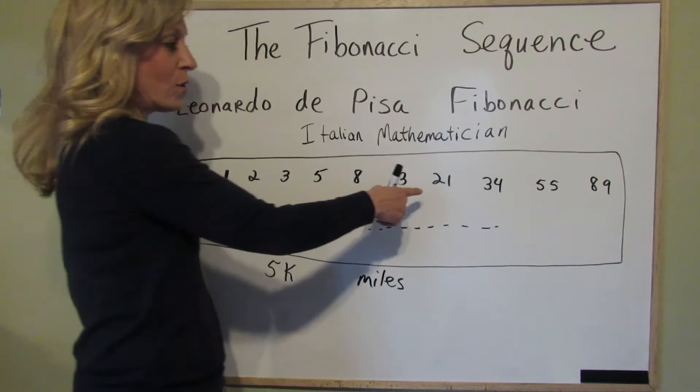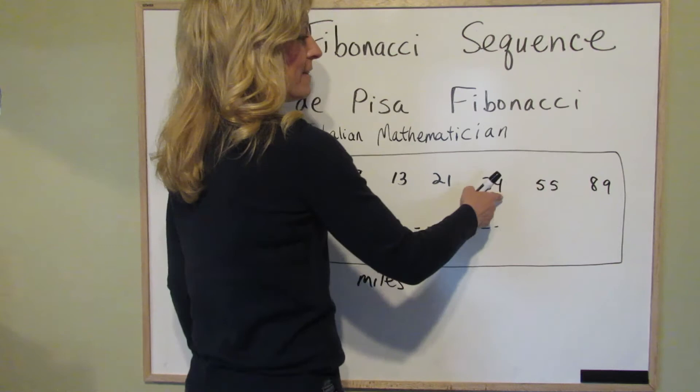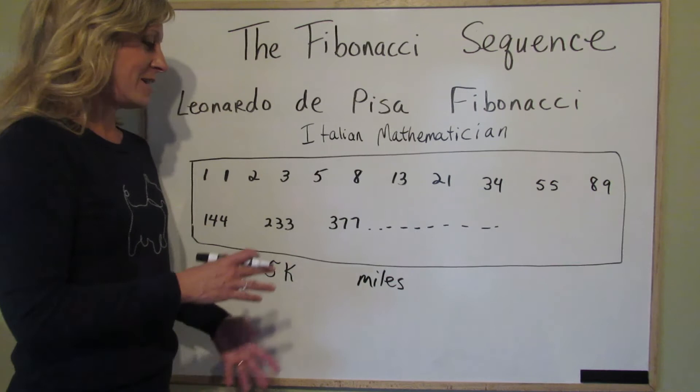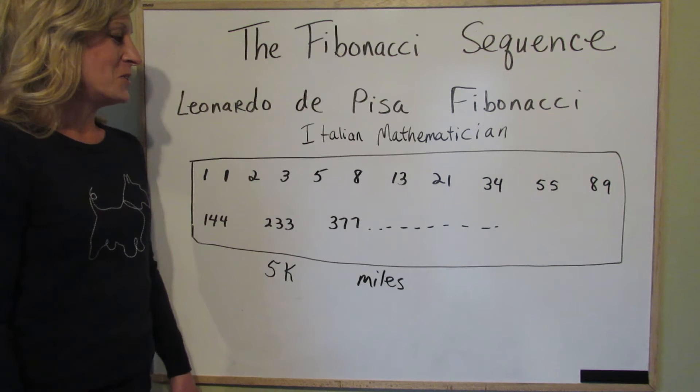A 13k is about 8 miles. A 21k, close to a half marathon, is about 13 miles. And I kept checking to make sure this was true — and 377k is close to 233 miles. So it holds true. There's your little fun lesson about the Fibonacci sequence.